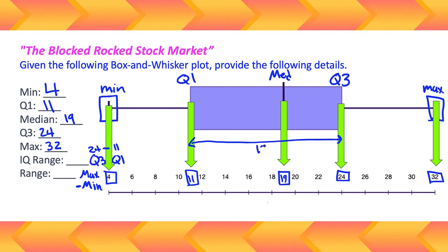And then the range, the range goes all the way from the min all the way to the maximum, so 32 minus 4 is going to be a range of 28. All right, so there we go, we have all of these things measured here.